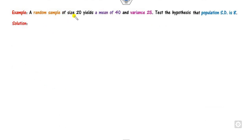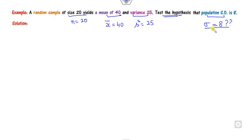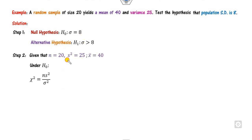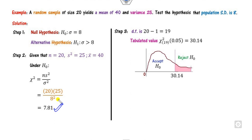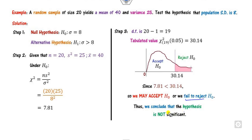Last example: A random sample of size n=20 has sample mean x̄=40 and sample variance s²=25. Test the hypothesis that the population standard deviation σ=8. We apply the chi-square test: χ² = (n-1)s²/σ₀² = (19×25)/64 = 7.81. Degree of freedom is n−1=19. Since 7.81 is less than the critical value of 30.144, it lies in the accepted region and we fail to reject H0. Hence H0 is accepted, meaning the test is not significant. This is how you solve the chi-square variance test for population variance.